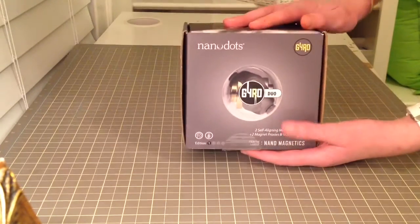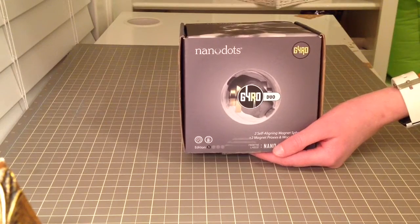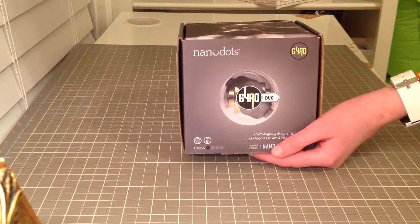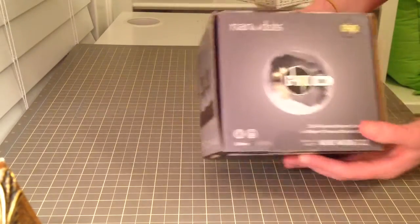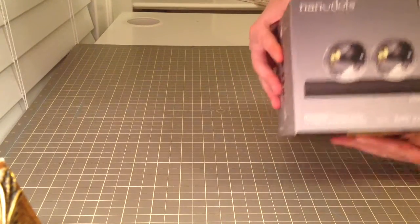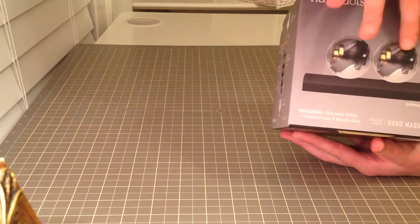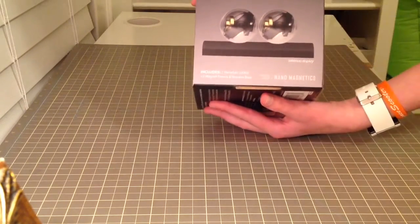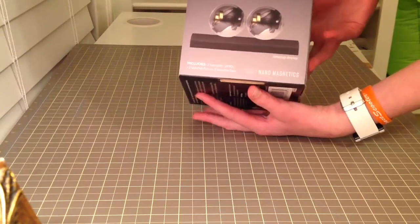So basically what these are, are two big clear magnets, and then it also comes with two extra ones that just have a little loose magnet inside. So it says Gyro, and they're both clear, and then you can see the north and the south poles, and then it comes with a wooden block to put them on.